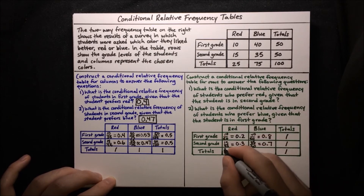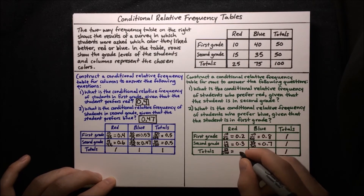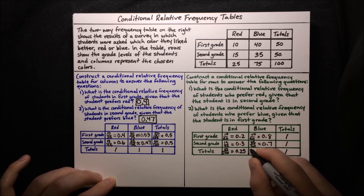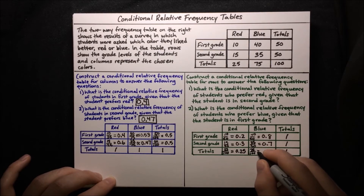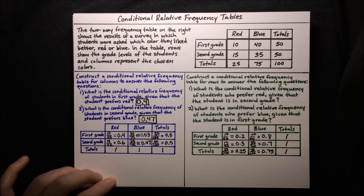Then we can divide the totals row by the sum 100. So 25 divided by 100 equals 0.25, and 75 divided by 100 equals 0.75.